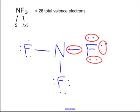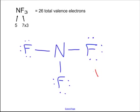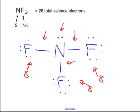All the fluorines have full octets. Now I'm going to count up how many electrons I've used: eight electrons on each fluorine, and eight times three is 24. I have 26 total valence electrons and used 24, so I have two left. I'm going to put them on the central atom. So nitrogen has two extra valence electrons on it.